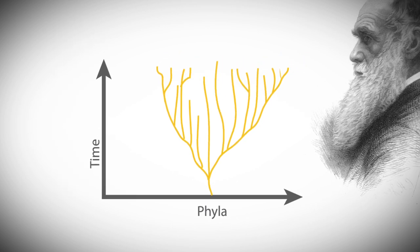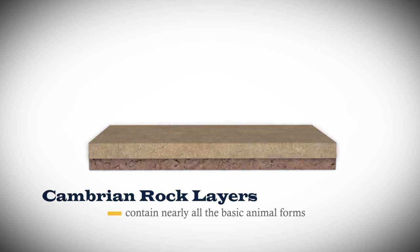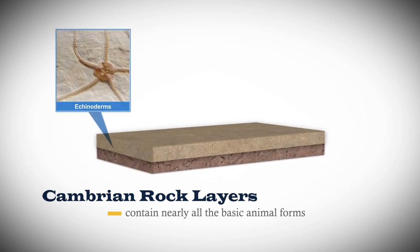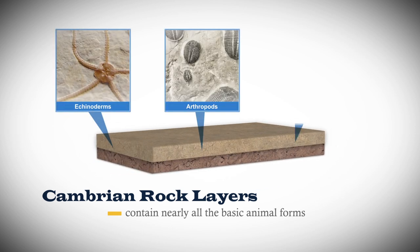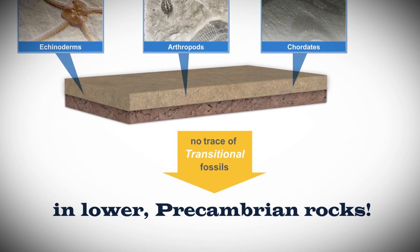But Darwin himself had a difficult time explaining what we now call the Cambrian Explosion of Life. Cambrian rock layers contain nearly all the basic animal forms, including echinoderms, arthropods, and even chordates, with no trace of transitional fossils in lower pre-Cambrian rocks.